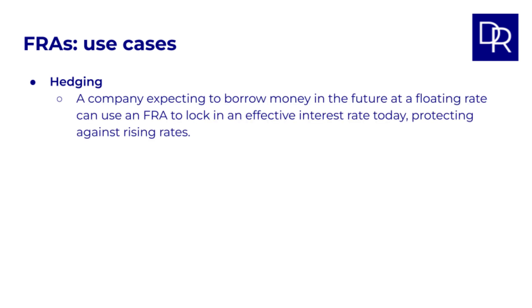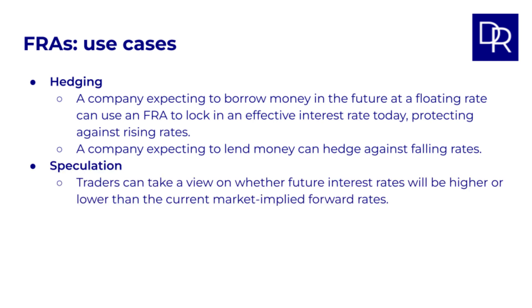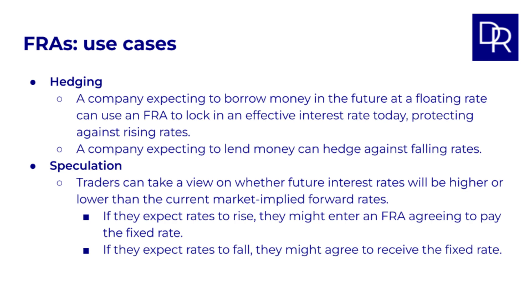Forward rate agreements are powerful tools used for various reasons in finance. For hedging: a company expecting to borrow money in the future at a floating rate can use a forward rate agreement to lock in an effective interest rate today, protecting against rising rates. Conversely, a company expecting to lend money can hedge against falling rates. For speculation: traders can take a view on whether future interest rates will be higher or lower than the current market implied forward rates. If they expect rates to rise, they might enter an FRA agreeing to pay the fixed rate. If they expect rates to fall, they might agree to receive the fixed rate.